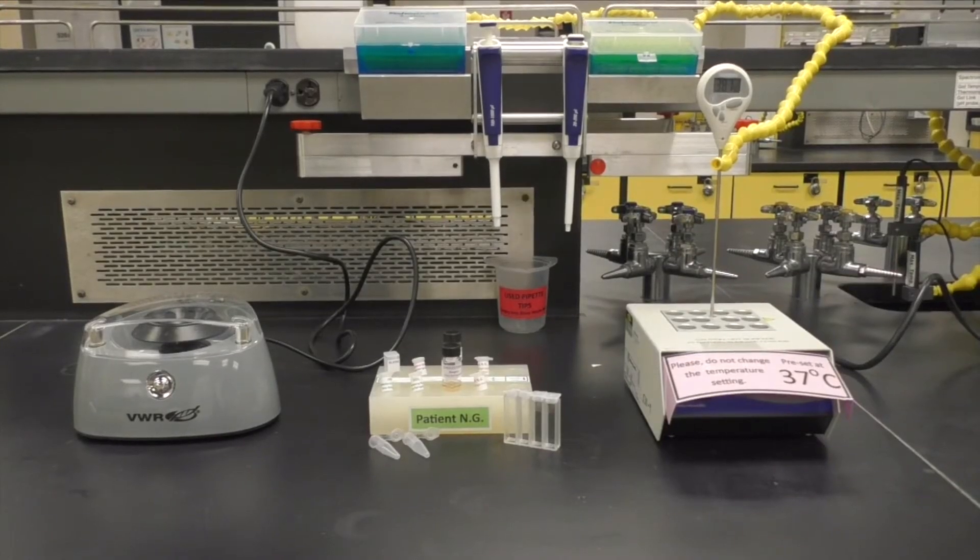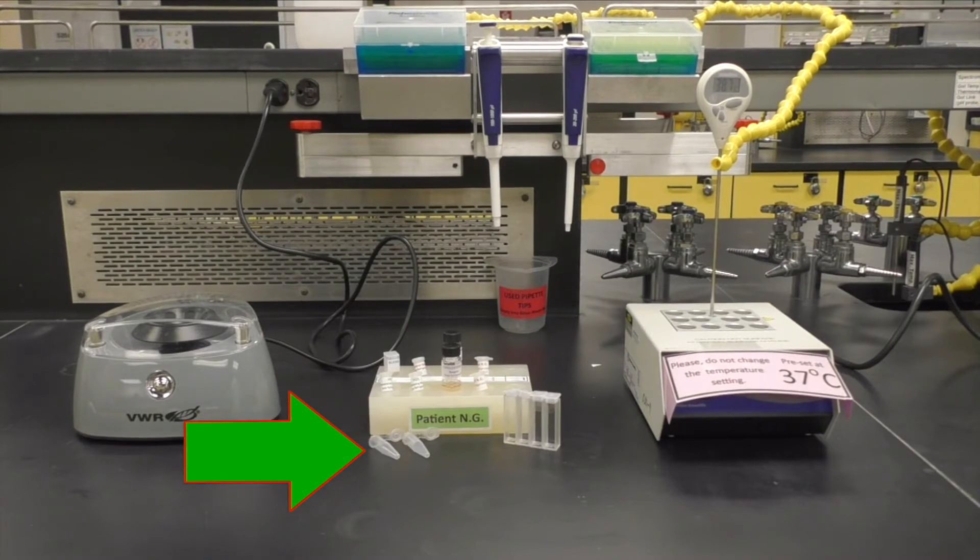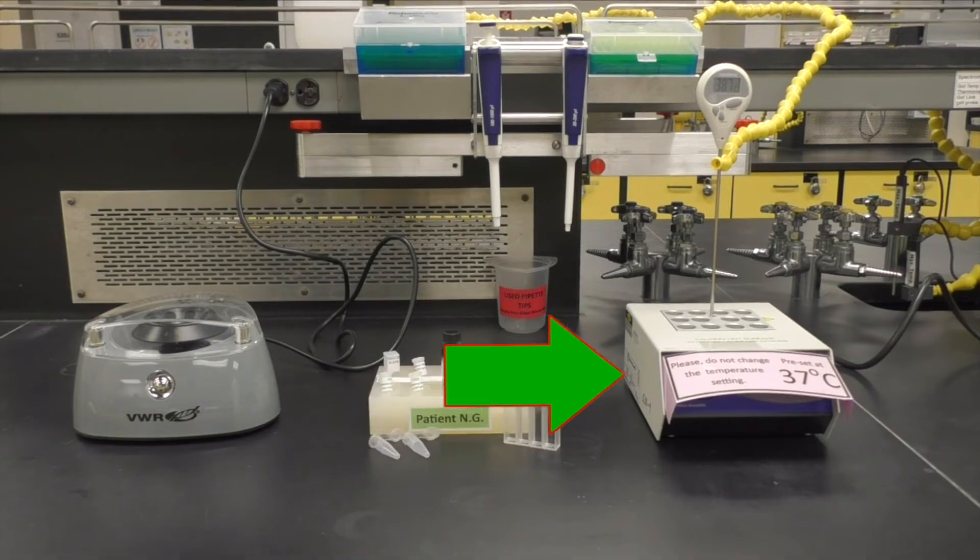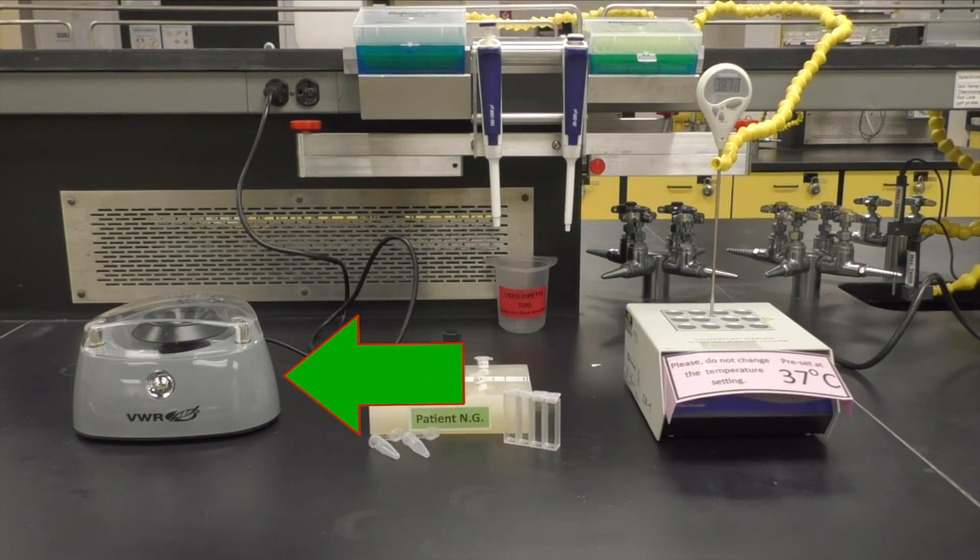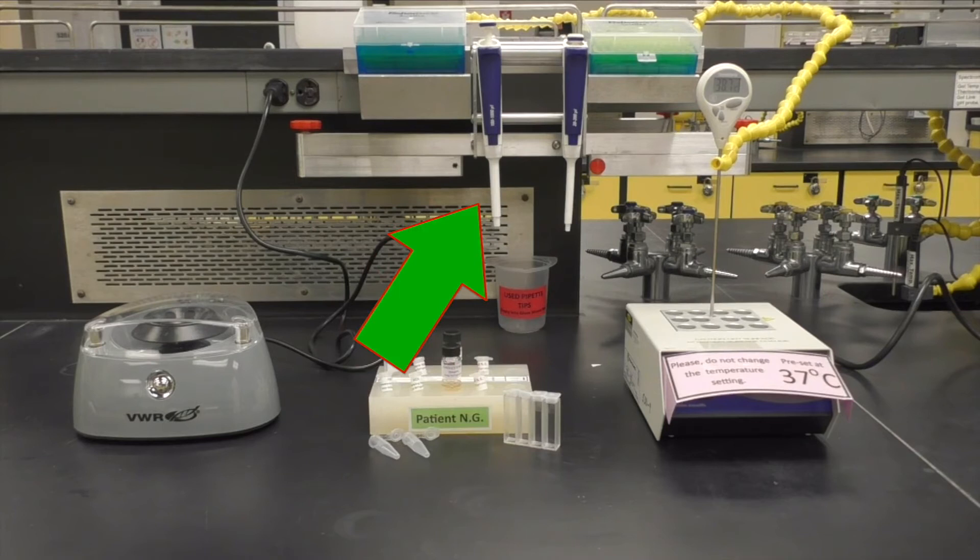To perform the experiment, you'll need your patient block, two new microfuge tubes, four new cuvettes with caps, a dry bath set to 37 degrees centigrade, a mini centrifuge, and your micropipettes and tips.